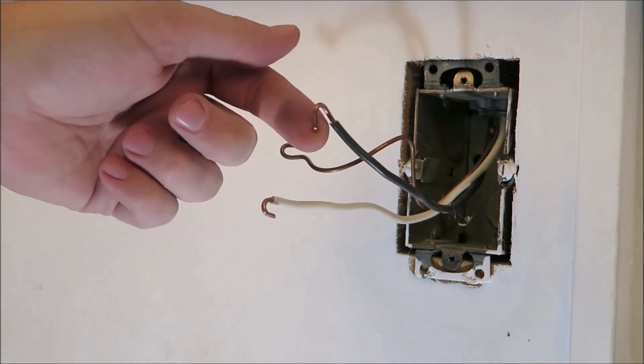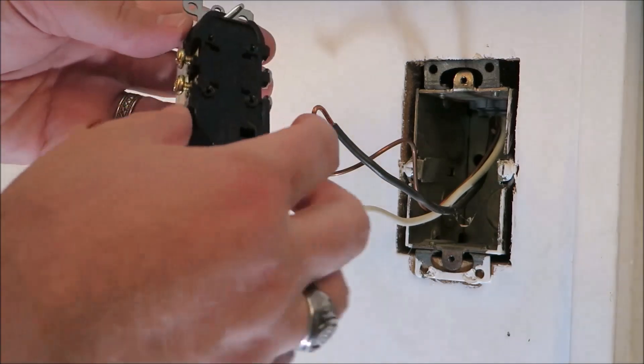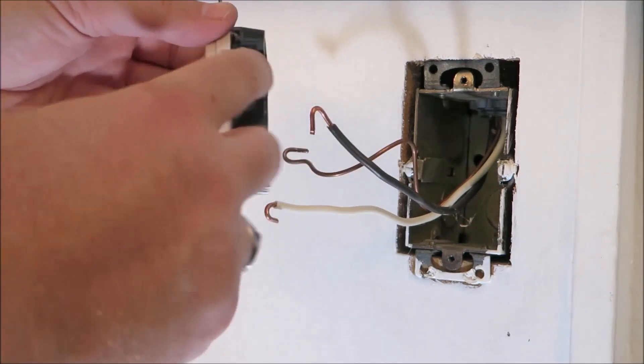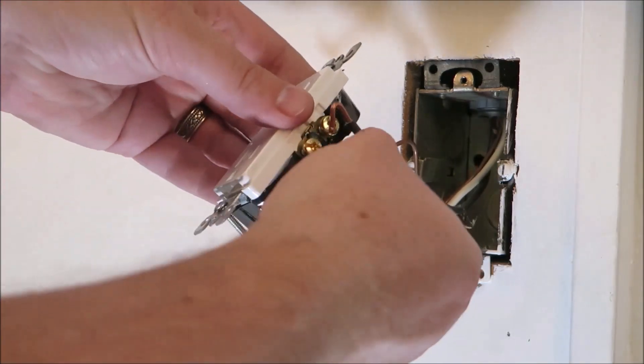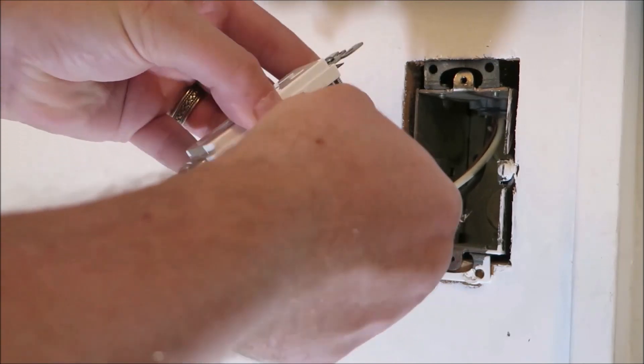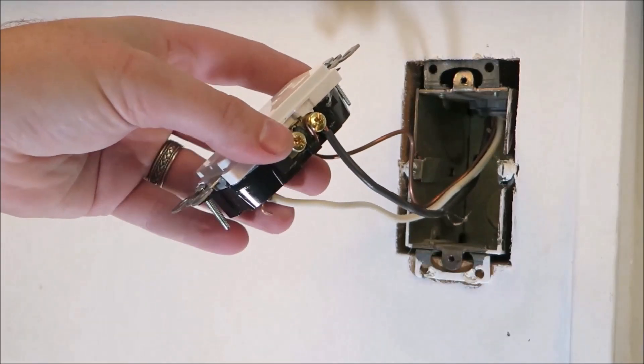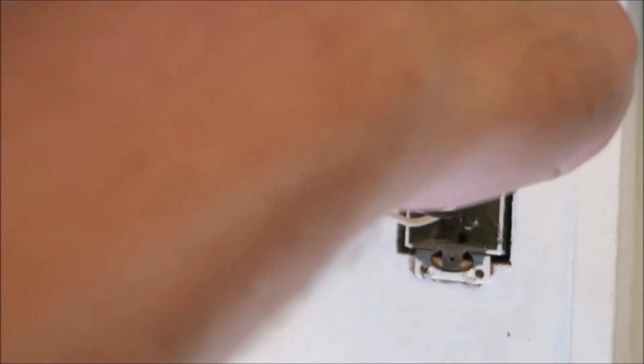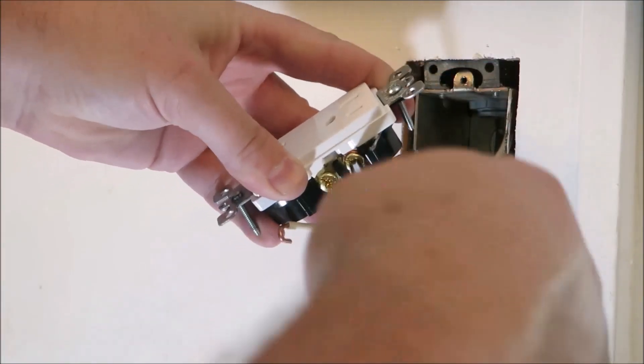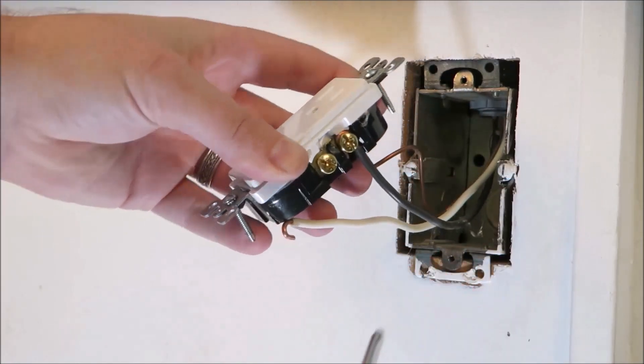So now that we have the loops on the wires, we're going to start attaching the different parts. We're going to take the hot and attach it to the hot side. Okay, so now we got the wire in there. Now we're going to go ahead and start tightening it up. Nice and tight.